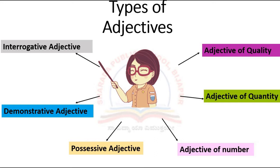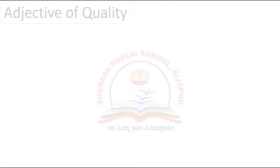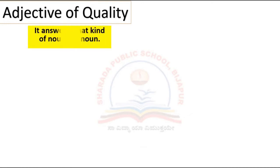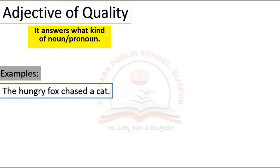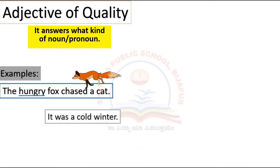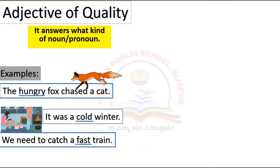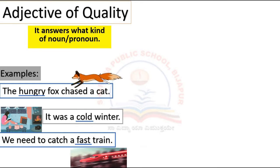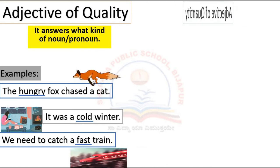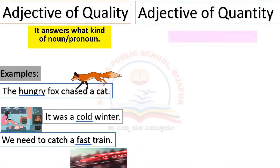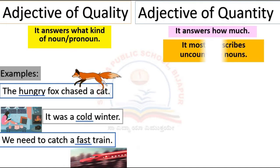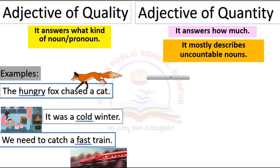Let's learn about adjective of quality. It answers 'what kind' of noun or pronoun it is. Examples: 'The hungry fox chased a cat.' 'It was a cold winter.' 'We need to catch a fast train.' The underlined words in these sentences are adjectives of quality.